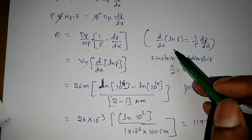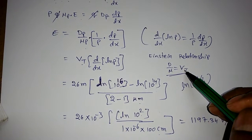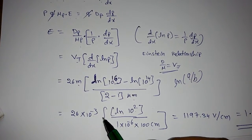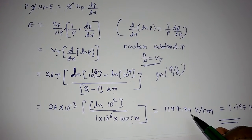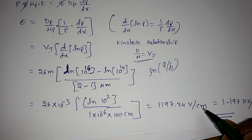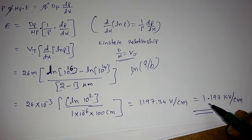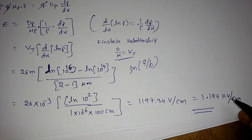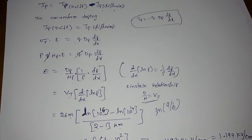Using the Einstein relation Dp/μp = Vt = 26 mV, and substituting: E = 26 × 10^−3 × ln(100) / 10^−4. Solving this gives approximately 1197.3 V/cm, which converts to 1.197 kV/cm. This is the magnitude of the electric field in the semiconductor due to non-uniform doping.